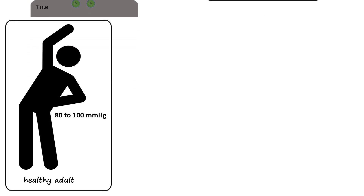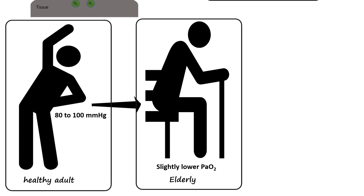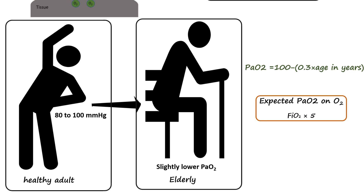PaO2 is directly measured in an arterial blood gas. The normal PaO2 range for a healthy adult breathing room air at sea level is 80–100 mmHg. For older adults aged more than 60, the normal range adjusts slightly lower to approximately 70–100 mmHg due to age-related changes in lung function. When a patient receives supplemental oxygen, the expected PaO2 is estimated to be 5 times the FiO2 administered.